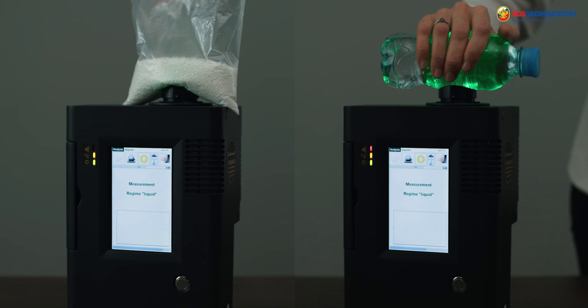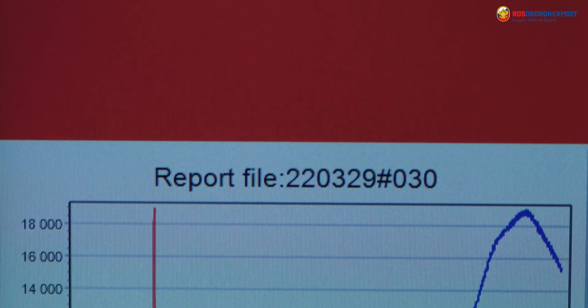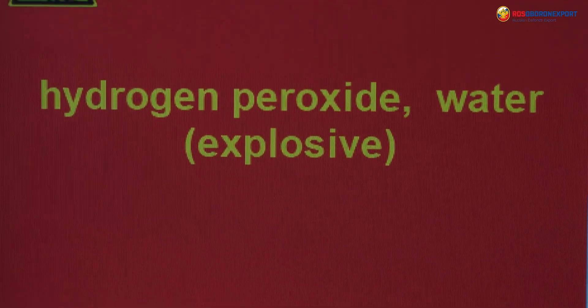It's possible to check the contents of bottles or containers made of transparent or colored glass or translucent plastic. Thus, the operator is not exposed to any potential hazard. There is no need to open the bottle or container or take any probes.